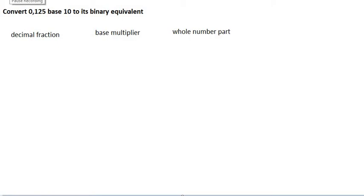In this video I'm going to show you how to convert a decimal fraction to its binary equivalent. We do so by multiplying with base 2 and we note down the whole number, and then we multiply again the remainder part of the fraction.